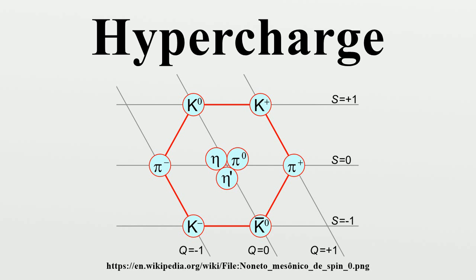SU(3) now needs two numbers to specify all its substates which are denoted by lambda 1 and lambda 2. Lambda 1 specifies the number of points in the topmost side of the hexagon while lambda 2 specifies the number of points on the bottom side.